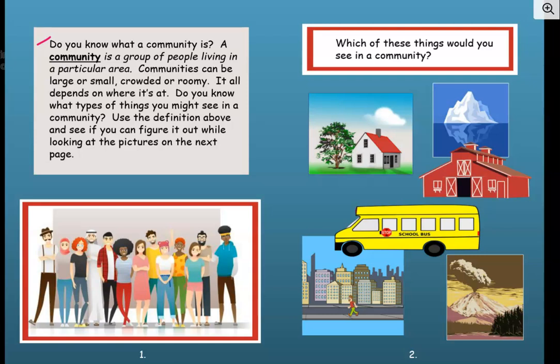It says: do you know what a community is? A community is a group of people living in a particular area. Communities can be large or small, crowded or roomy. It all depends on where it's at. Do you know what types of things you might see in a community? Use the definition above and see if you can figure it out while looking at the pictures on the next page.